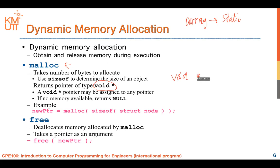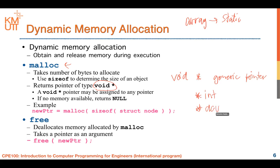A void pointer is a generic pointer that can point to any kind of pointer - int star, double star. When you use malloc, if no memory is available in your physical memory, it will return null, meaning you cannot allocate any more memory. The next slide shows an example of how to write the program using malloc.